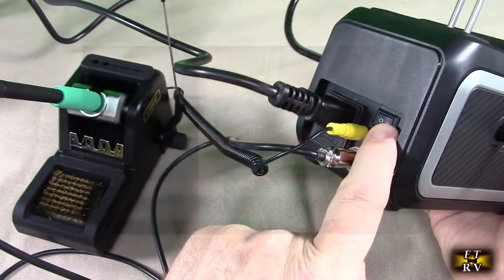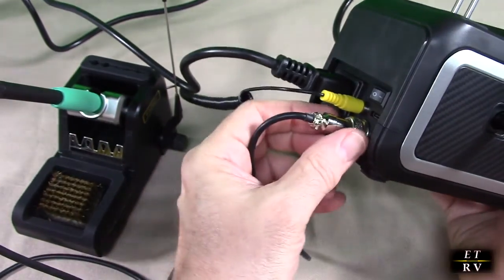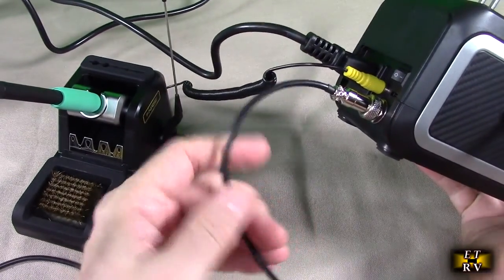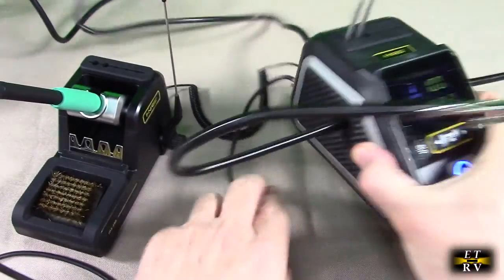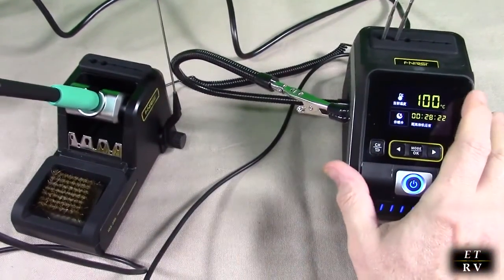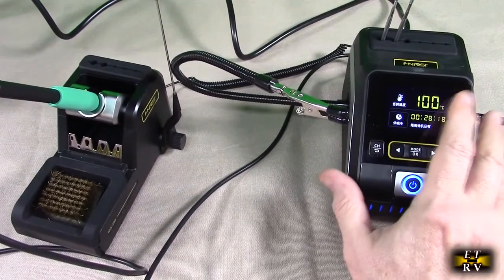There is a master power switch. You have to have that on. There is that connection that goes to the other unit. Then here's the barrel connector you push in and that's where it gets the power from this transformer to power and warm up this unit itself. Now it has the power of the station.